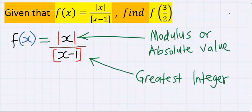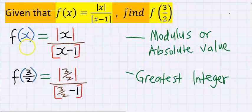To solve this problem, the numerator is enclosed in absolute value or modulus. Modulus or absolute value rejects negatives. The denominator is enclosed in a greatest integer function. Greatest integer functions accept only integers, no decimals or fractions.